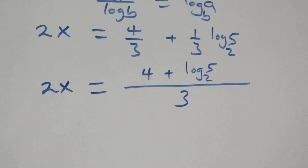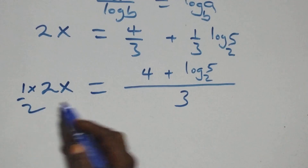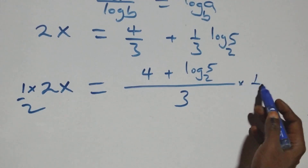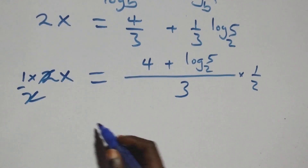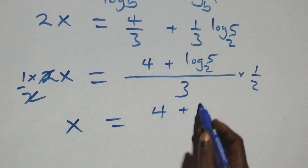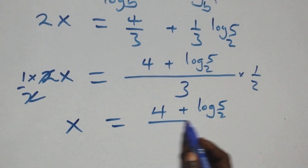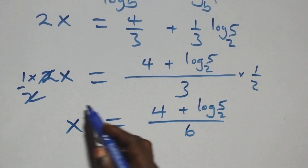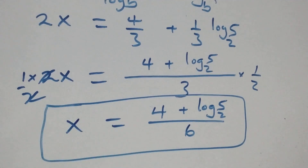To remove the 2 on this side, we multiply both sides by 1 over 2. The 2 values cancel, and we have x equals (4 plus log base 2 of 5 minus 2) all over 6. Now let's check whether this satisfies the given problem by substituting this value of x, which is x equals (4 plus log base 2 of 5 minus 2) all over 6.